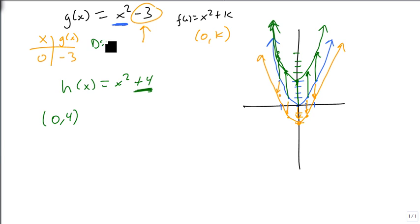Our domain, of course, here is still minus infinity to infinity. If we're only dealing with x squared, then it's always going to be minus infinity to infinity. But our ranges have changed. The range for this one is minus 3 to infinity. And our range for this one is 4 to infinity. Notice that the range is based off of that k value. And that's how we graph if we only have something added after the x squared.